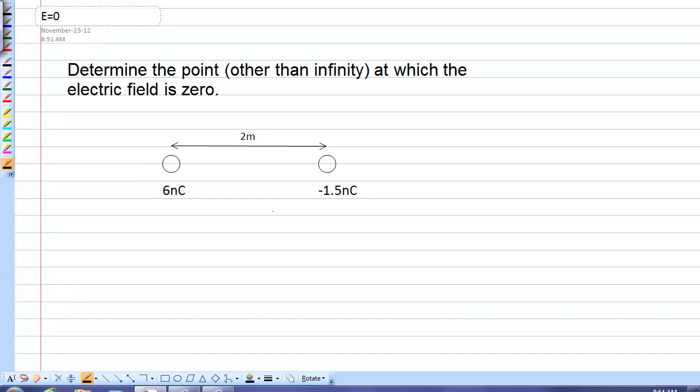In this problem, we're trying to find the location where the electric field is zero. We have to look at the electric field vectors on the left of these two charges, between the two charges, and to the right of the two charges.